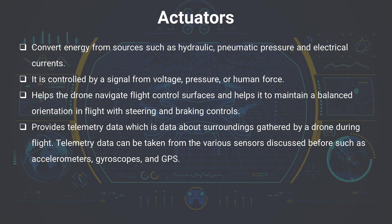Actuators are critical in controlling the movement and orientation of components such as flaps, rotors, brakes, and other mechanical parts within a drone. They translate control signals from the flight controller and convert energy from various sources to execute kinetic movement to navigate the operating environment, such as the ability to hover, fly, and perform other maneuvers to avoid a collision.